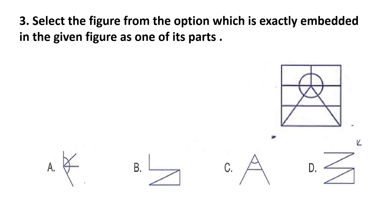Question number 3. Select the figure from the options which is exactly embedded in the given figure as one of its parts. Look at the options carefully and find out the answer. The answer is option C. You can see that option C is present in this figure — these lines are given in option C.